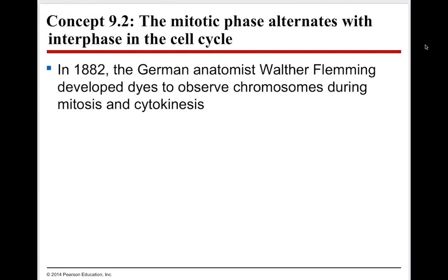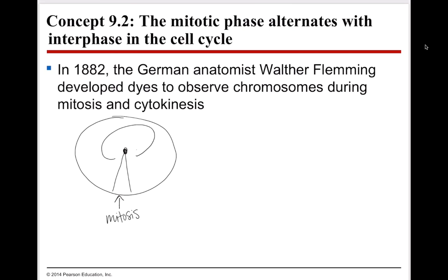The mitotic phase alternates with the interphase of the cell cycle. The overall cell cycle is a circle, and only a very small portion of it is actually mitosis. This whole large part is called interphase, which is about 90% of the cell's life, meaning mitosis is only about 10%. Walter Fleming developed a dye that lets you look at chromosomes to determine where the cell is in the cycle — in mitosis, cytokinesis, or interphase.